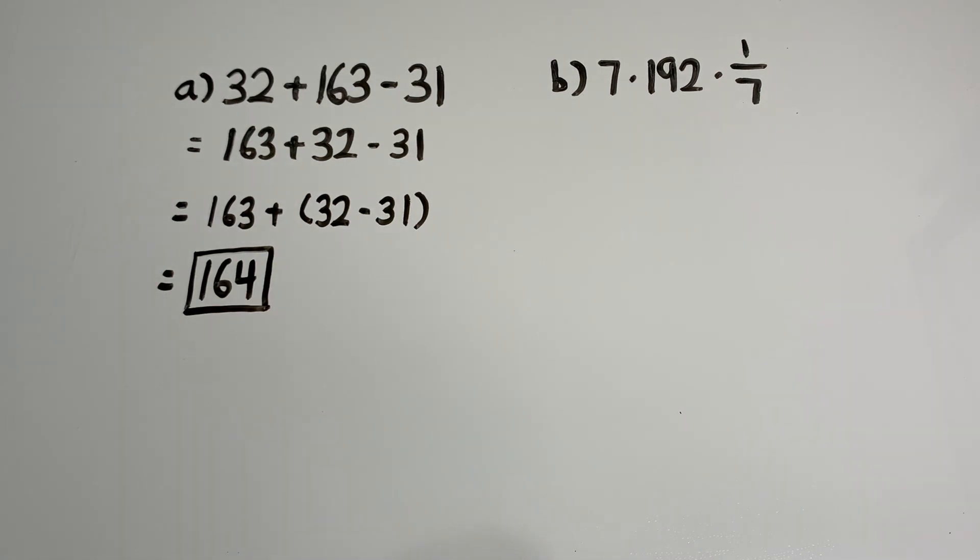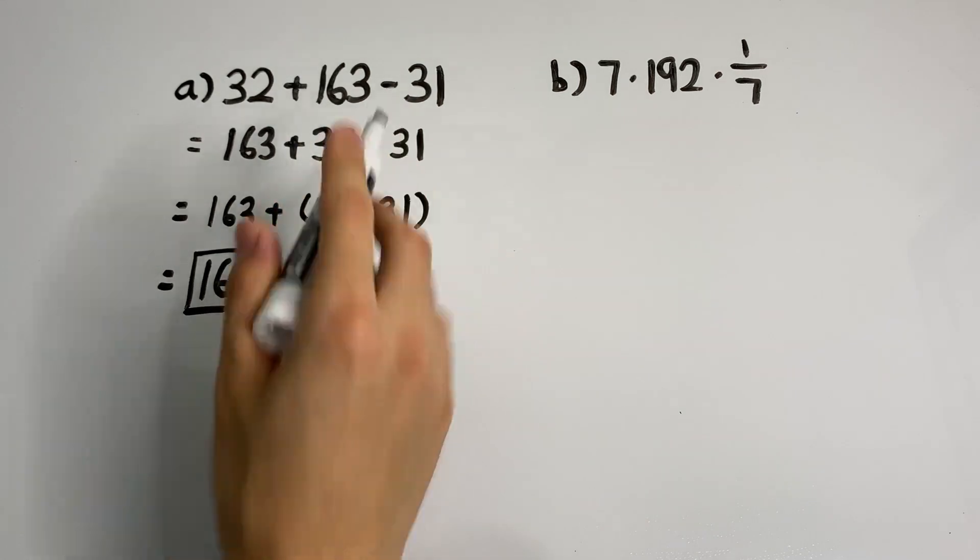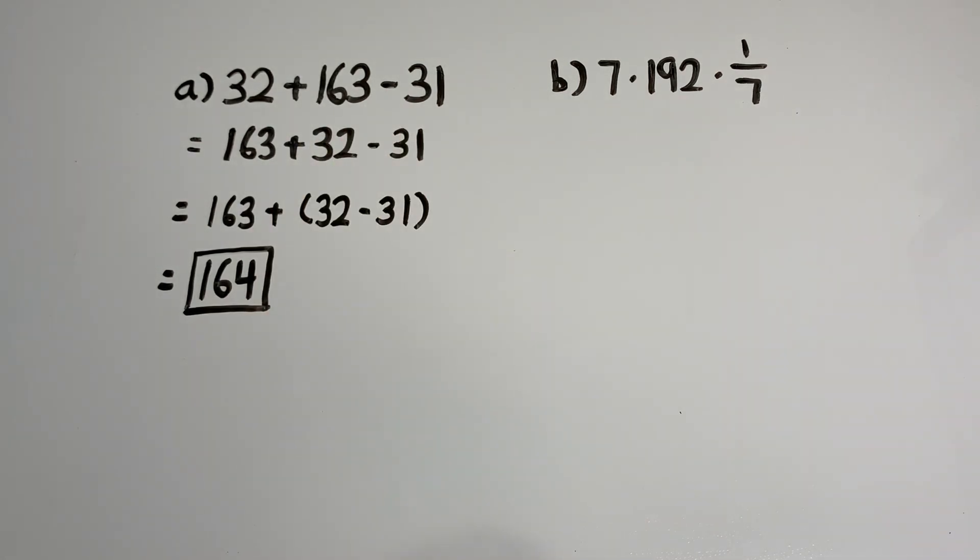Now, that gives the same answer if we just went from left to right, because 32 plus 163 is 195 minus 31, which does give 164. But the commutative and associative properties made things easier for us and we found the answer much quicker.